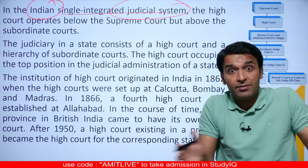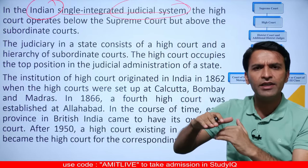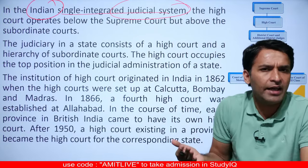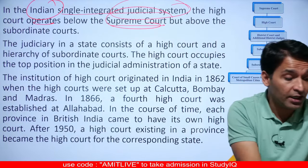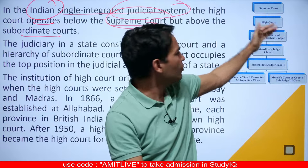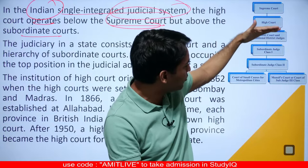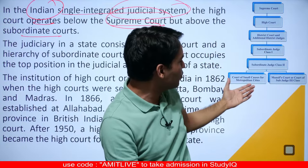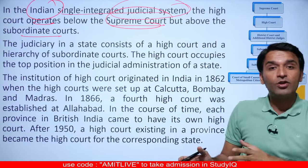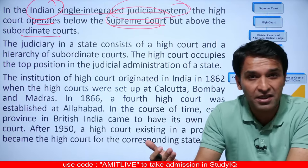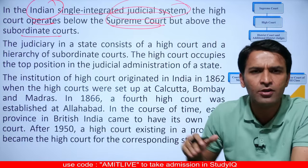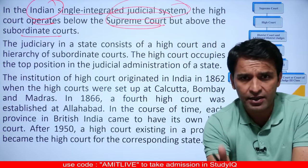In India, this kind of federal system does not exist. Instead, there is a single hierarchy: at the bottom are subordinate courts, above them are district courts, then High Courts, and at the very top is the Supreme Court. This is a unified, individual hierarchy. Within any state, the highest court is the High Court, below which are district and additional district judges, then subordinate courts.